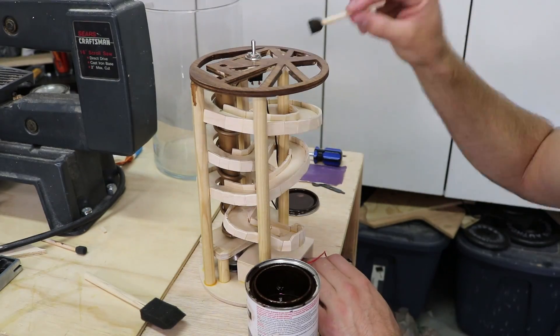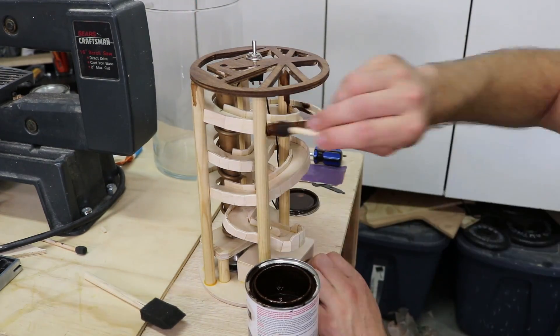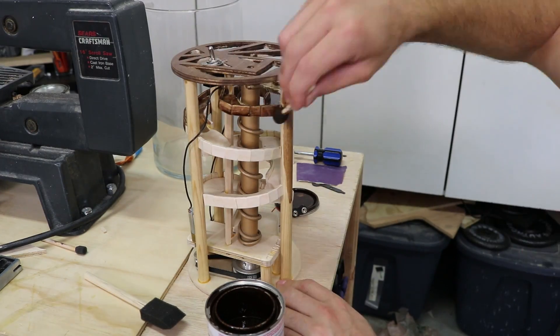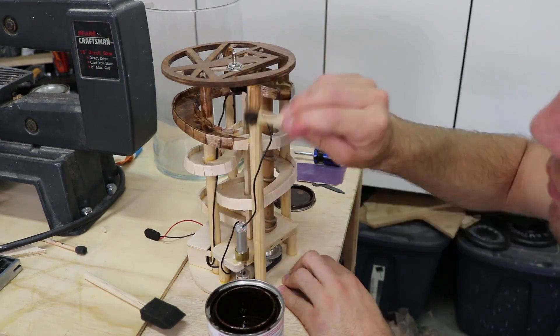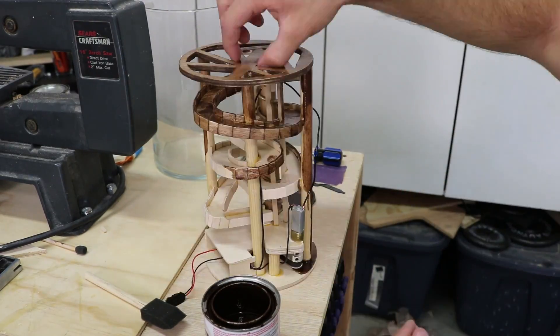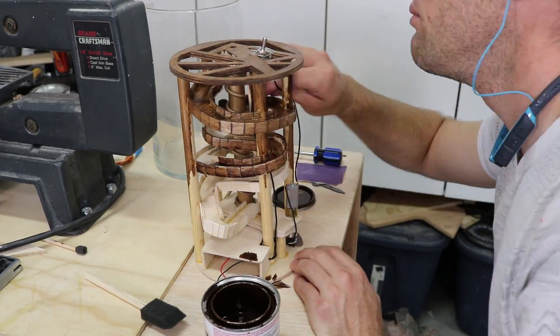I applied the stain with a sponge brush and spread it around as evenly as I could. I chose this color because it matches the other furniture I already have, so it'll make a nice addition to the living room.